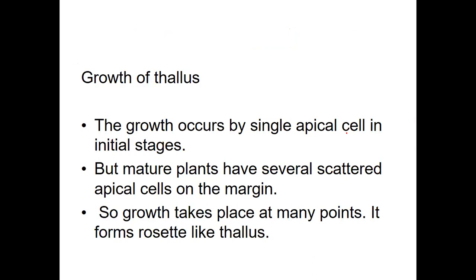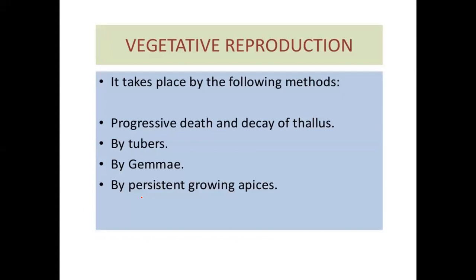Next we will continue with how the thallus grows. Growth in Anthoceros generally occurs by a single apical cell. At the lobe margins we can see the presence of apical cells, which divide and help in growth of the thallus. Even Anthoceros also reproduces by vegetative reproduction, as well as asexual and sexual reproduction.